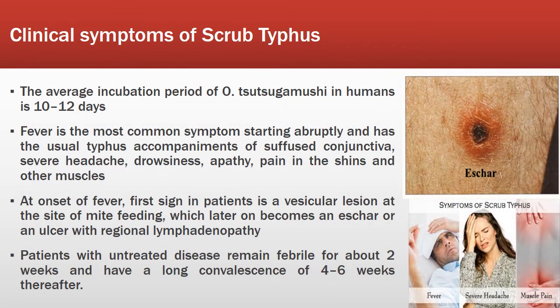Regarding clinical symptoms of scrub typhus, the average incubation period of Orientia tsutsugamushi in humans is 10 to 12 days. The most common symptom is fever, which starts abruptly, followed by headache, drowsiness, apathy, and pain in the shins and other muscles. At onset of fever, the first sign in patients is a vesicular lesion at the site of mite feeding, which later becomes an eschar or ulcer with regional lymphadenopathy.